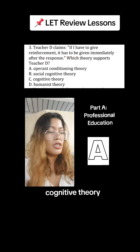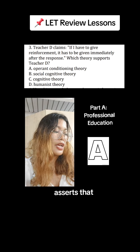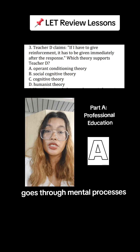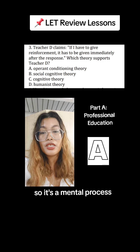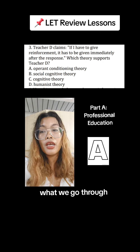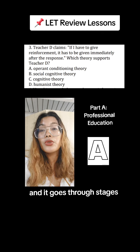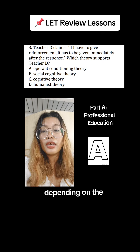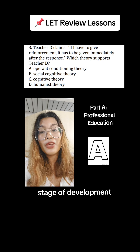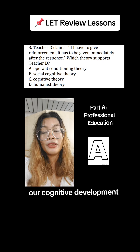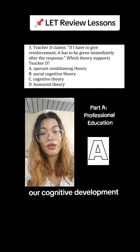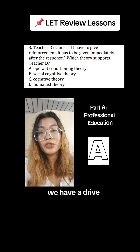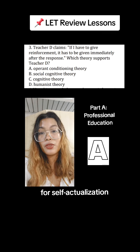Cognitive theory asserts that human behavior goes through mental processes — the mental processes we go through depend on the stage of cognitive development of a person. Humanist theory assumes we have a drive for self-actualization.